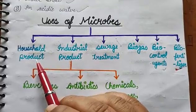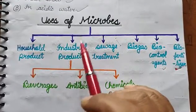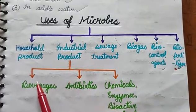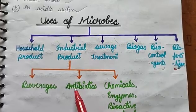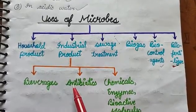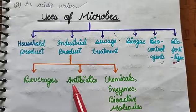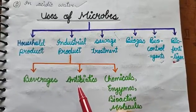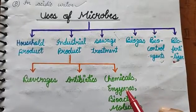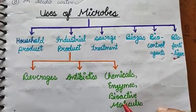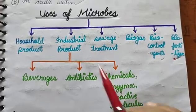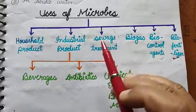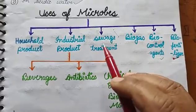First is household products. Second is industrial products. In industries there are main products which are made with the help of microbes: first is beverages, second is antibiotics, third is chemicals, enzymes, and bioactive molecules. These are the industrial products which can be prepared with the help of microbes.